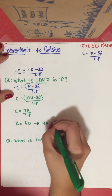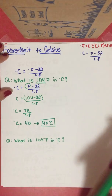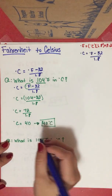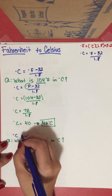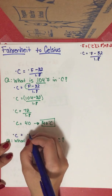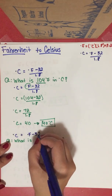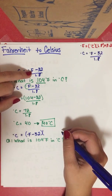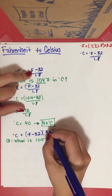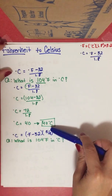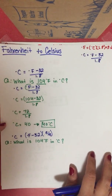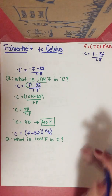For those who prefer fractions, the formula for Fahrenheit to Celsius is: degrees Celsius equals degrees Fahrenheit minus 32, multiplied by 5 over 9. Keep in mind: going from Fahrenheit to Celsius you multiply by 5 over 9, and from Celsius to Fahrenheit you multiply by 9 over 5.